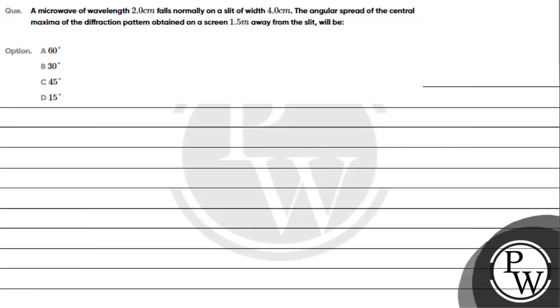Hello, let's see the given question. A microwave of wavelength 2 cm falls normally on a slit of width 4 cm. The angular spread of the central maxima of the diffraction pattern obtained on the screen 1.5 meters away from the slit will be: